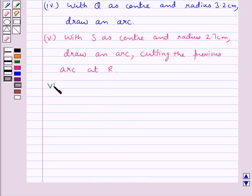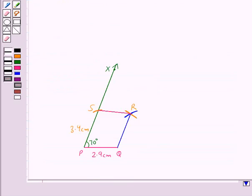Then in the next step we join RS and RQ. So now we have joined RS and RQ. RQ is of measure 3.2 cm and RS is of measure 2.7 cm.